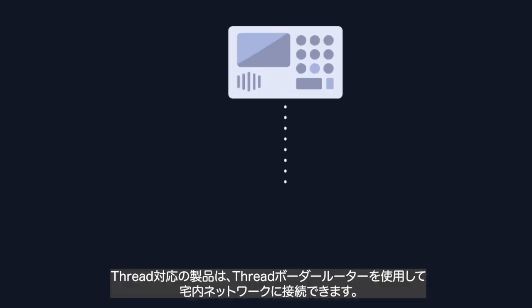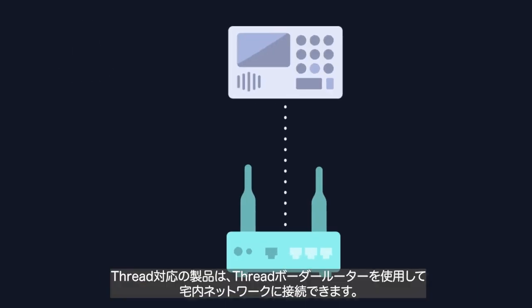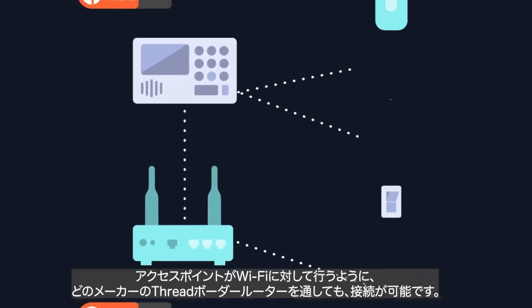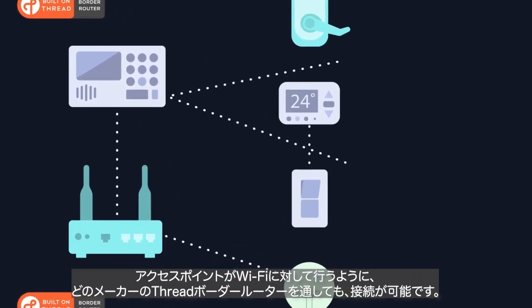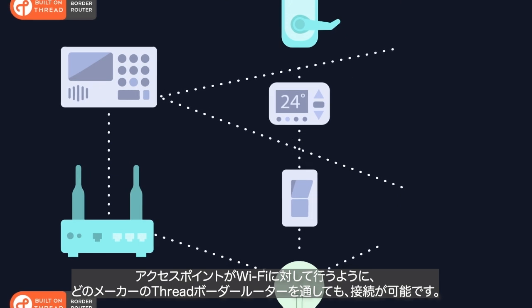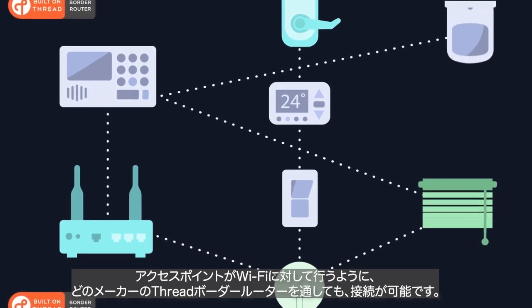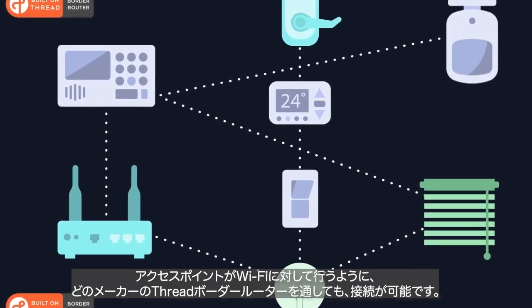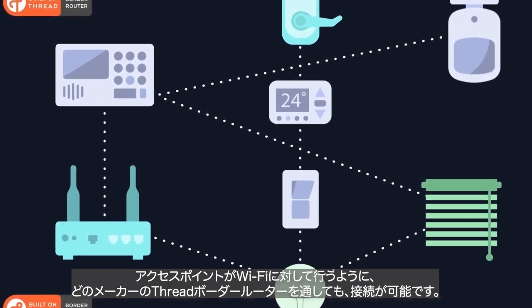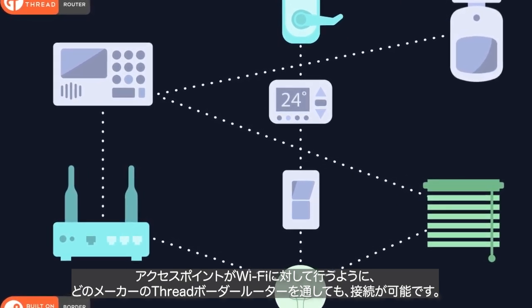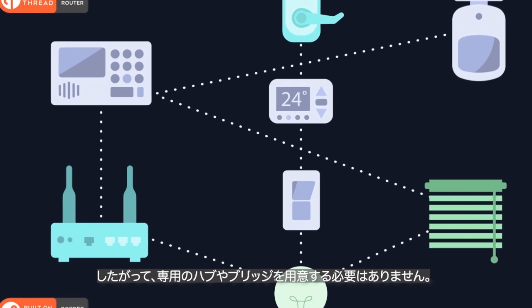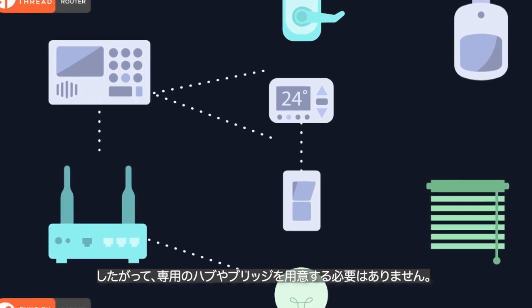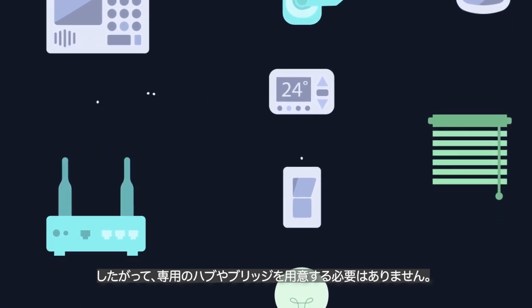Thread devices can join the local network using standard Thread border routers. Just like an access point does for Wi-Fi, a Thread border router from any brand can connect all Thread devices to your users' network, so you don't have to build proprietary hubs or bridges.